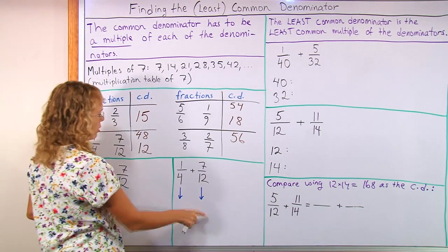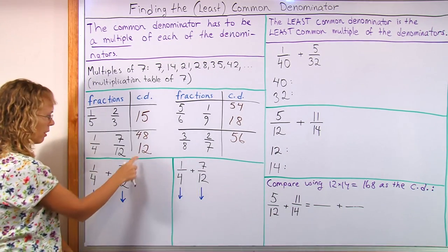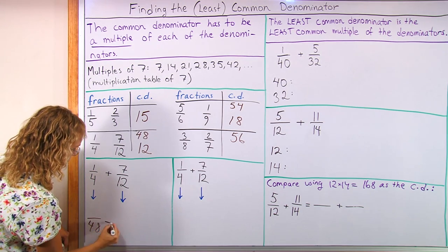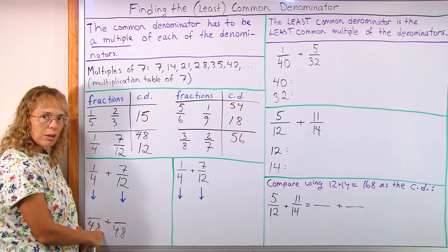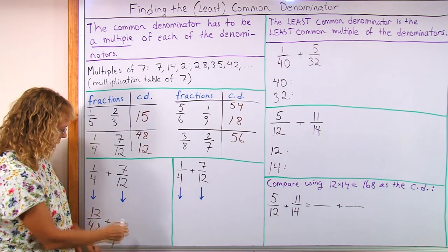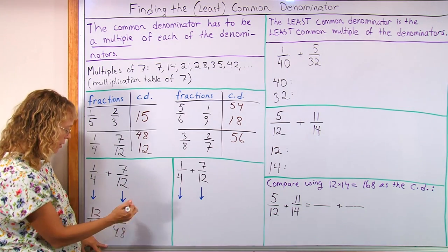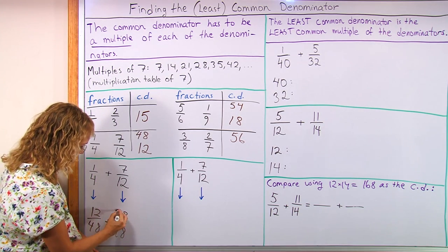Now, let's add these two fractions using two different denominators and see what the difference is. If I use 48 as a denominator, 48, 48 here. Okay, 4 goes to 48 12 times, so I have to go 1 times 12, 12. 12 goes to 48, 4 times, so I have to go 7 times 4 here. 28. 28.